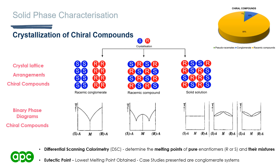When discussing solid phase characterization — a key step in designing an enantioselective crystallization — this helps us understand the arrangement of the crystal lattice and whether enantiomers crystallize as a racemic conglomerate or a solid solution. A conglomerate crystal lattice arrangement is desirable. This solid phase characterization can be achieved using binary phase diagrams or ternary phase diagrams.